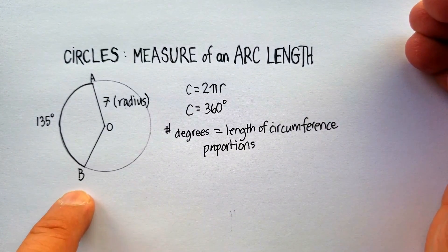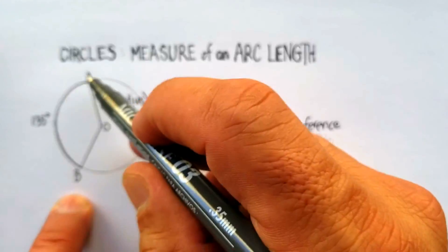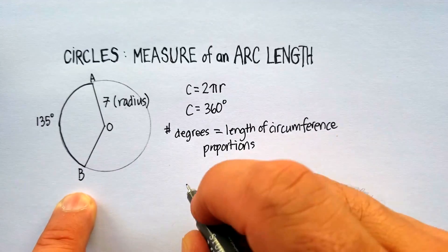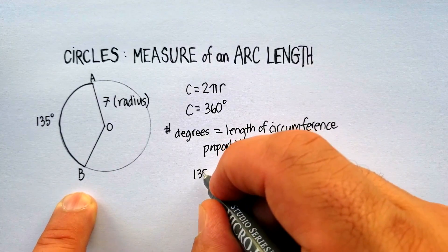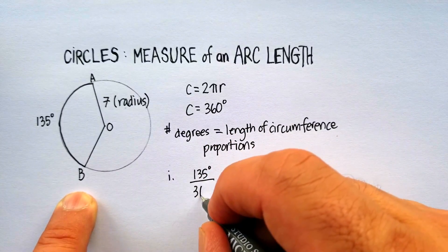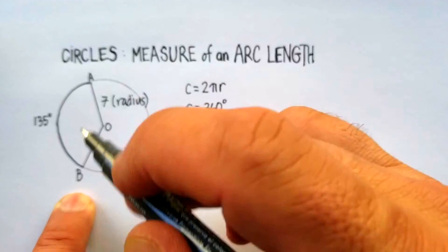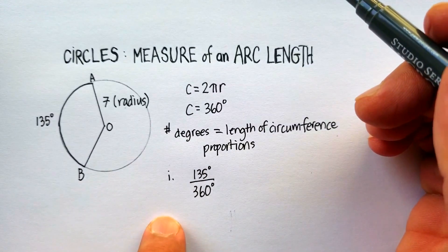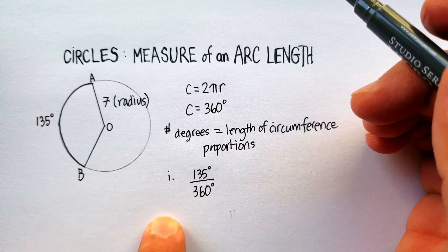Well, what we know is that this particular arc is 135 degrees. Step one. Out of 360 degrees, which is the total distance around the circumference, around a circle.